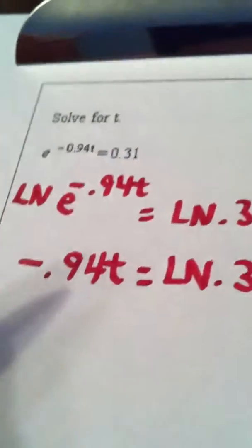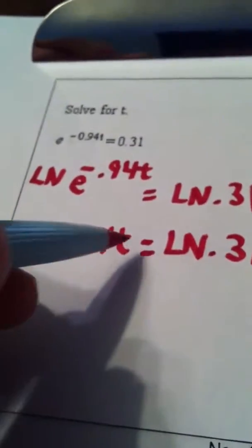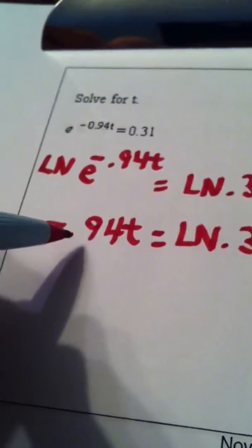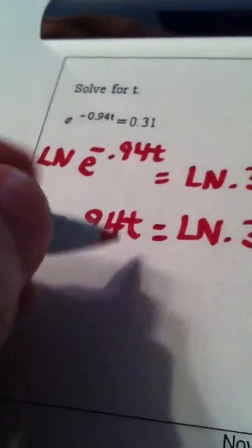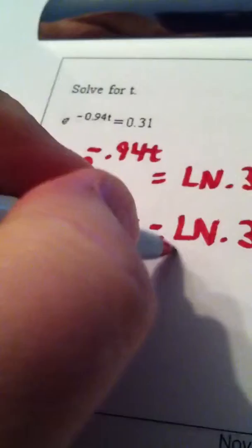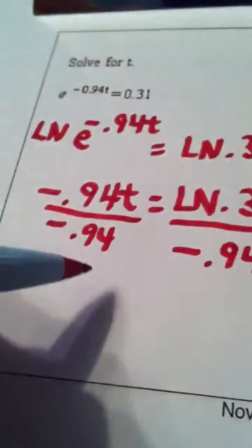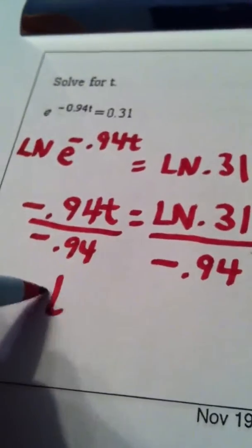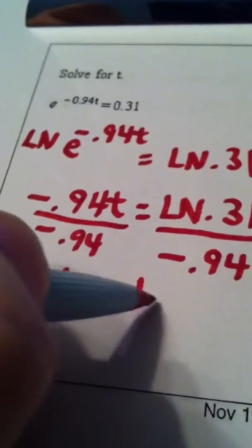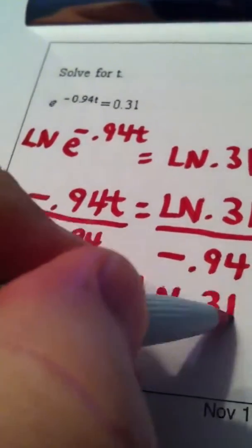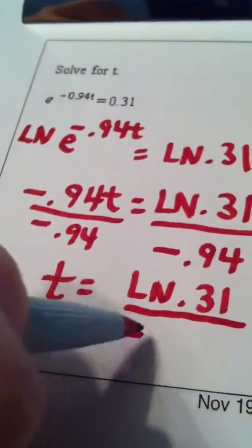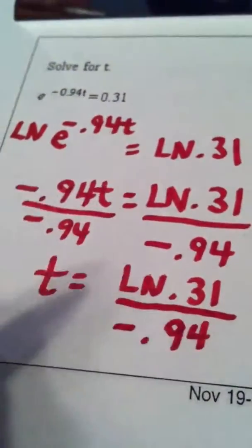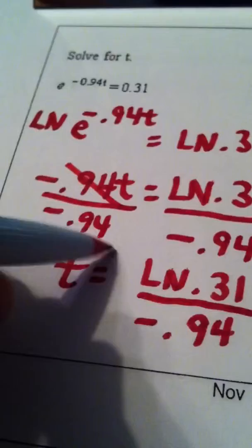All right, to finish this, I divide both sides by negative 0.94, and t is equal to the natural log of 0.31 divided by negative 0.94.